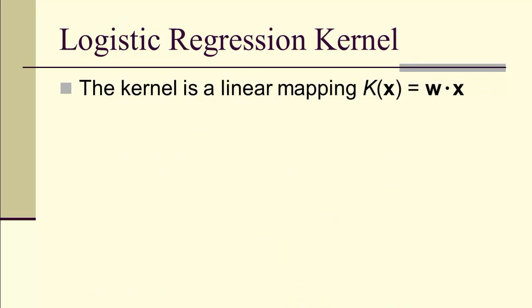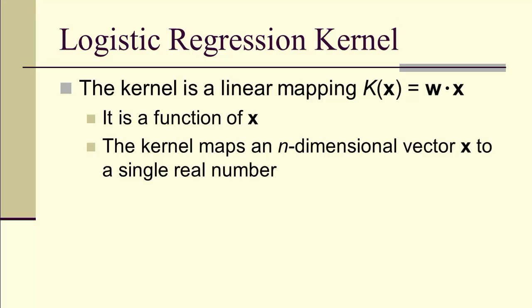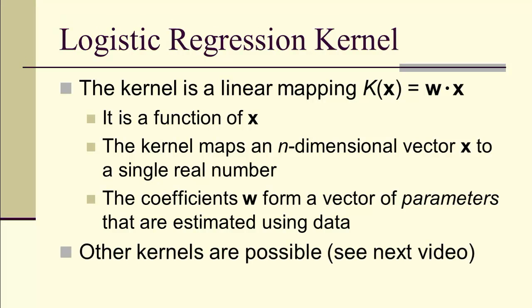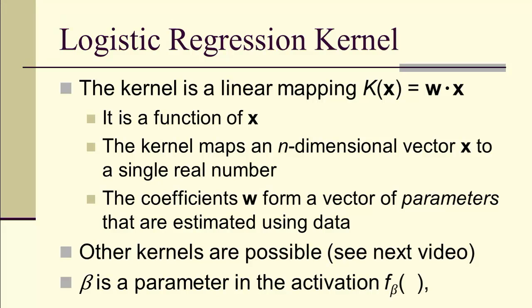Notice in our case, the kernel is a linear mapping. It's a function of x that maps an n-dimensional vector x to a single real number. The coefficients also form a vector, but they are a vector of parameters. We'll be looking at other kernels in later lectures. Beta is also a parameter, but it's a parameter of the activation function, not the kernel.